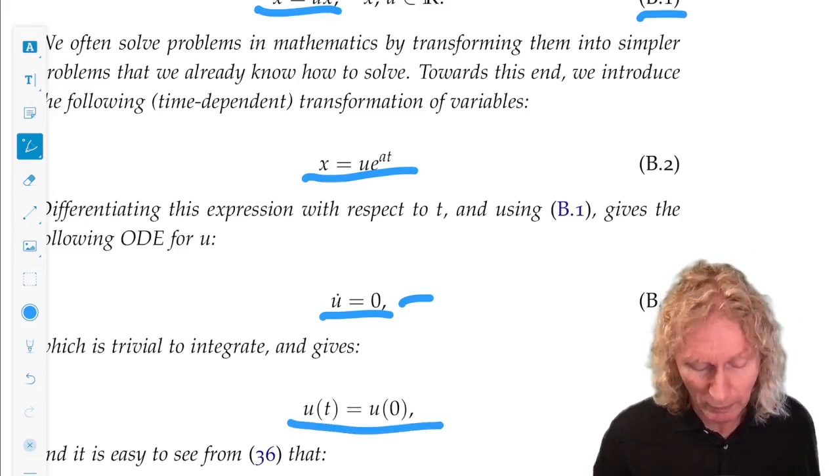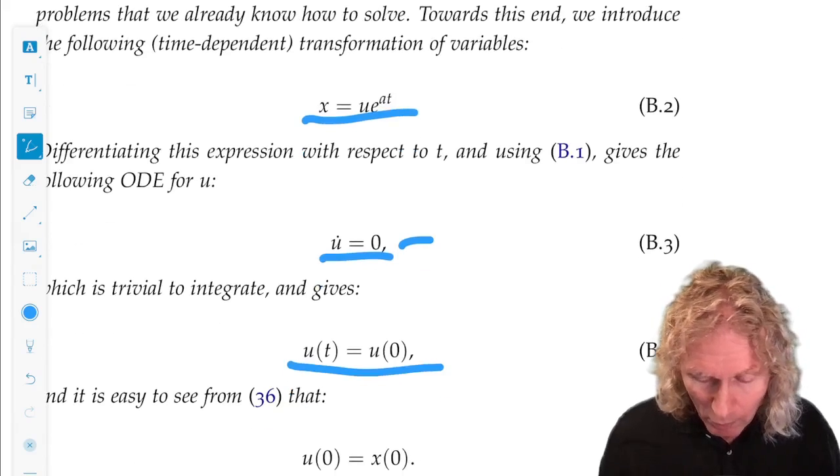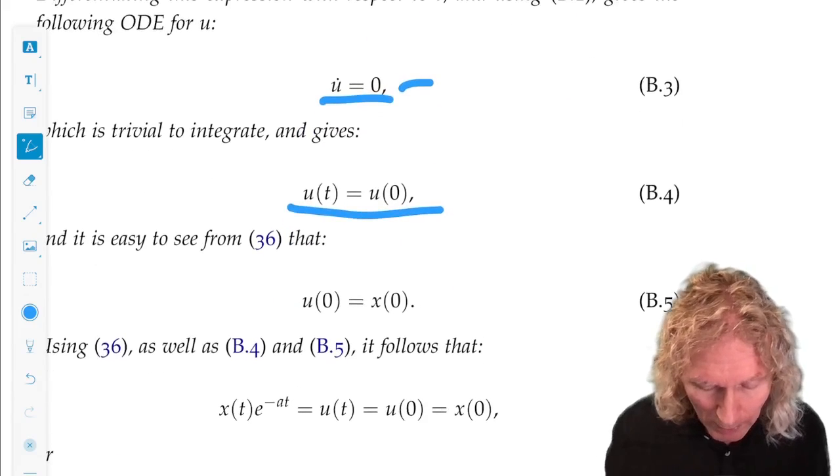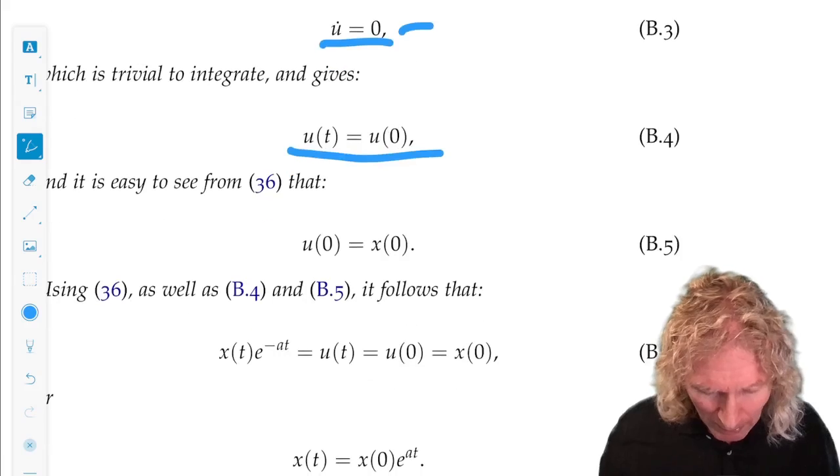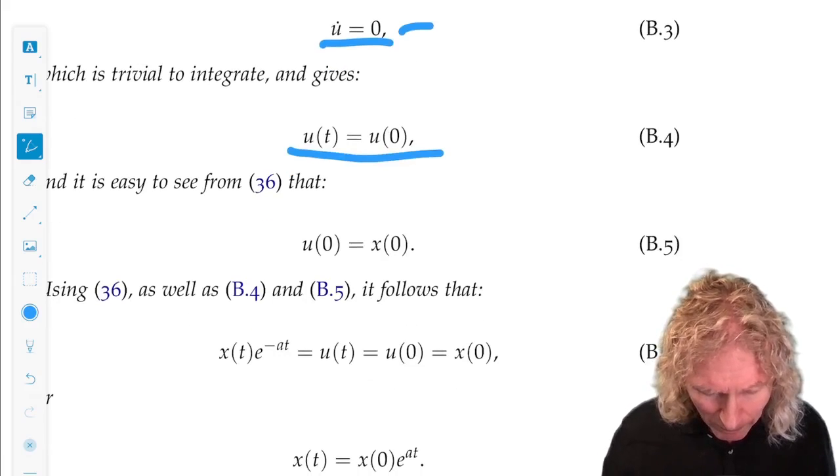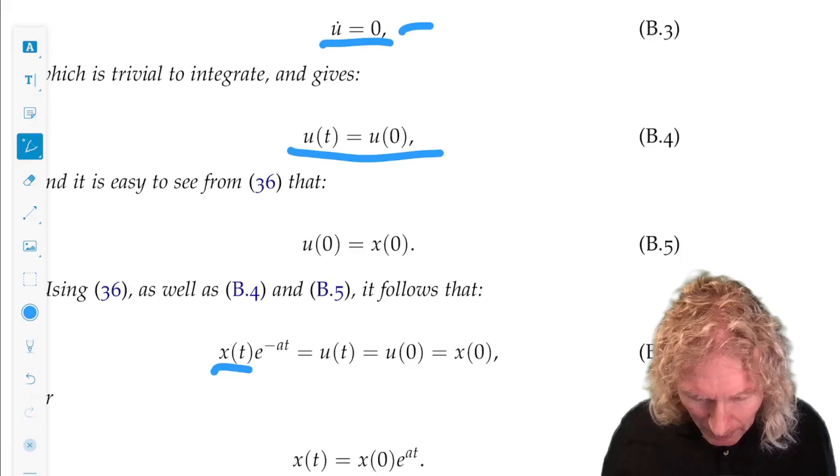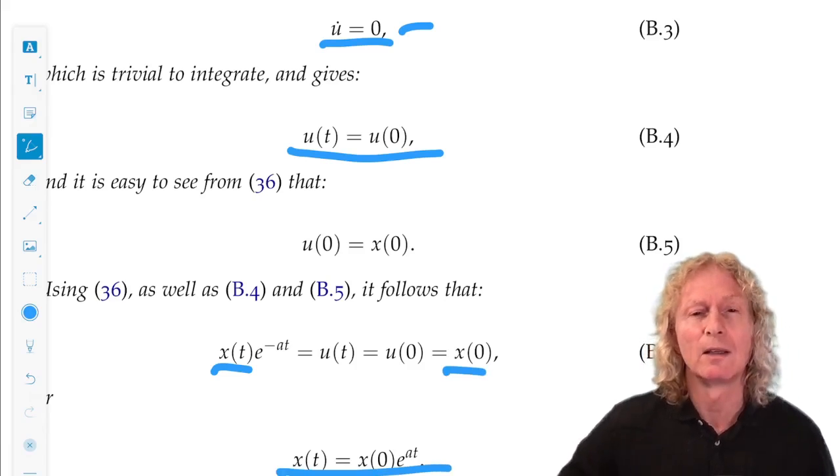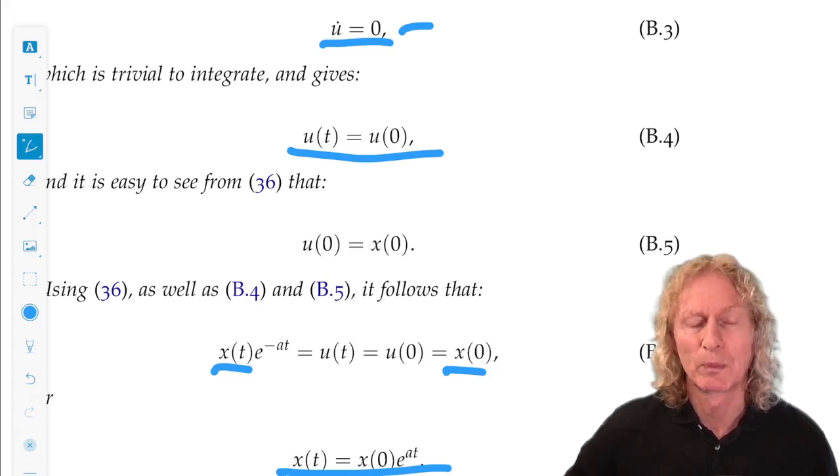So we can integrate that U dot is zero. Tells me U of T is U of zero. We substitute back in what U is in terms of X. We see immediately that U of zero is X of zero. And therefore, that X of T is X of zero times e to the AT. Slick.